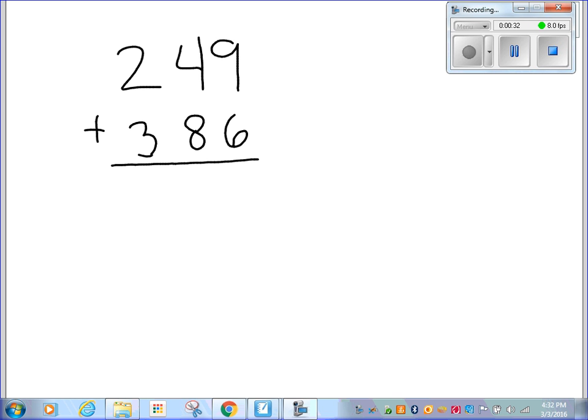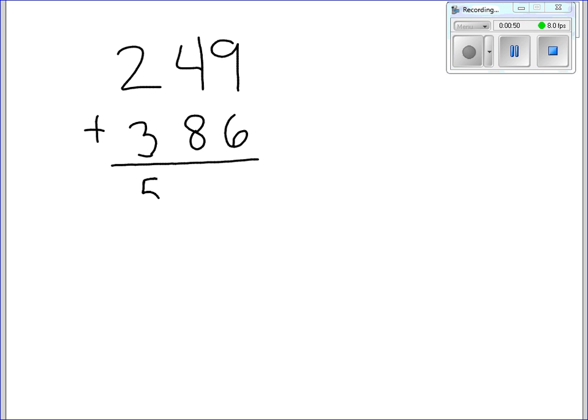The show all totals method starts over on the left with the hundreds. So in this problem, I've got 249 plus 386. So if I start over on the left with the hundreds, I'm adding three plus two, which of course we know is really 300 plus 200. So 300 plus 200 equals 500. So I'll write 500 down here.